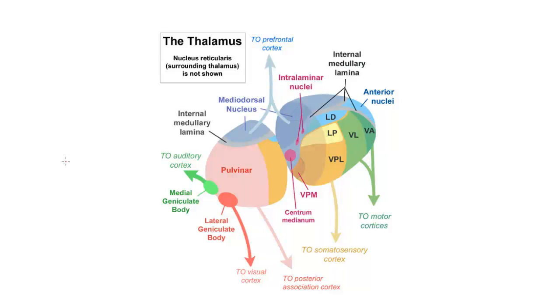And the key organizing principle of the thalamus is its division into a number of different nuclei. And if the thalamus does anything well, it does this.